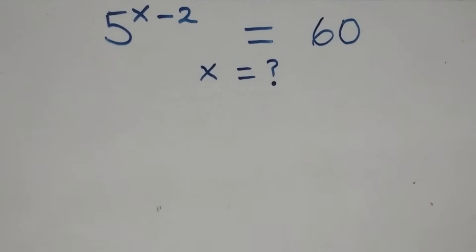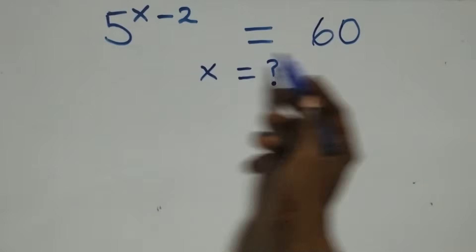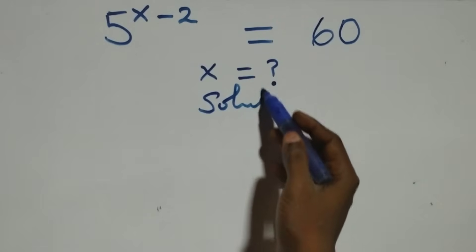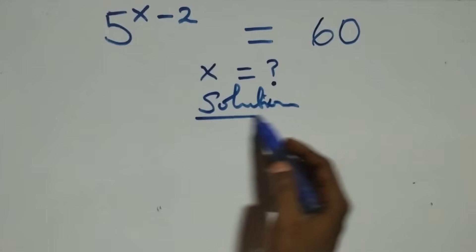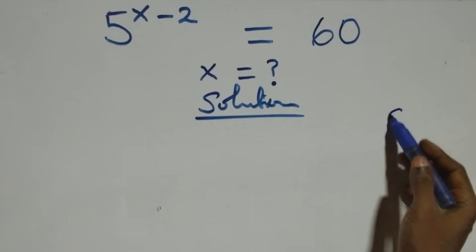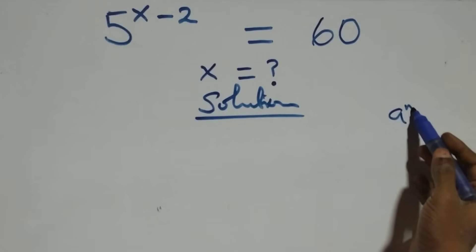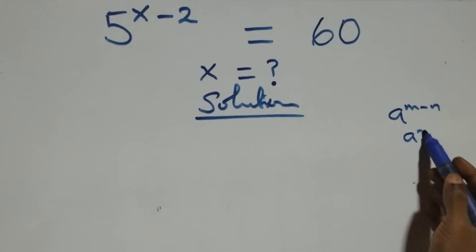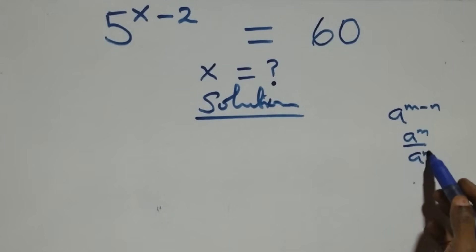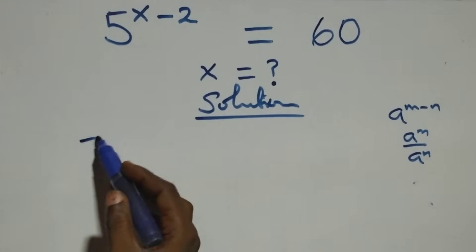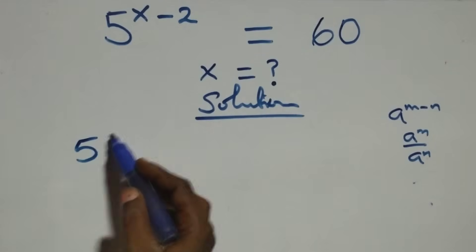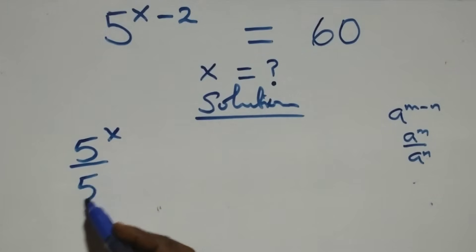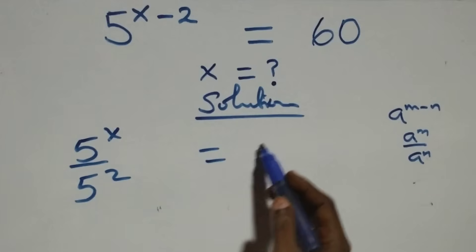Hello, you are welcome. How to solve this nice exponential equation. We have here that a raised to power n minus n is the same thing as a raised to power n over a raised to power n. This becomes 5 raised to power x over 5 squared equals 60 on this side.